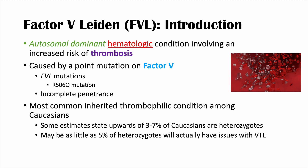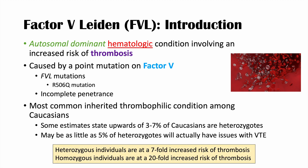There are significant differences between those with one affected allele and those with two. In heterozygote individuals — those with one affected allele — this autosomal dominant condition increases the risk of thromboses by sevenfold. However, if you have two affected alleles and are a homozygous individual, you have a very high risk of thromboses — in fact, a 20-fold increased risk of thrombosis.